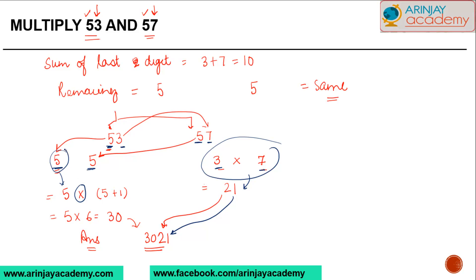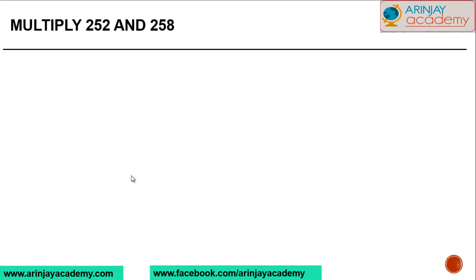30 became the left hand part of the answer. Now this was applicable when they were two digits. How about this? Can I apply the same rules over here? If you look at it, the last two digits in these two numbers are 2 plus 8, or in other words the sum of the last two digits is 10.